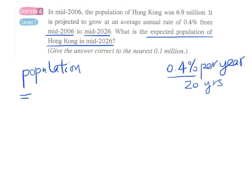We have 6.9 million times 1 plus 0.4%. And since we have 20 years, therefore, the power should be 20.